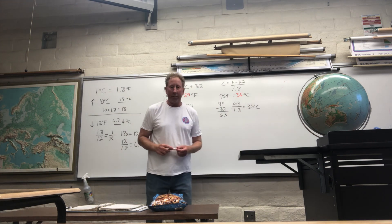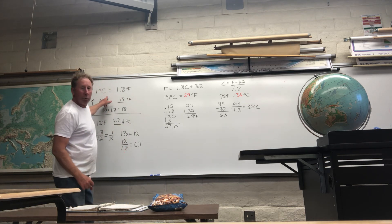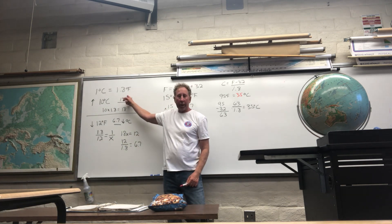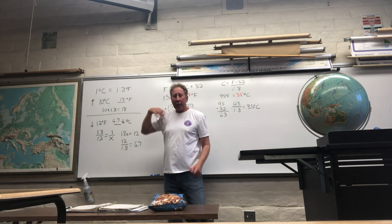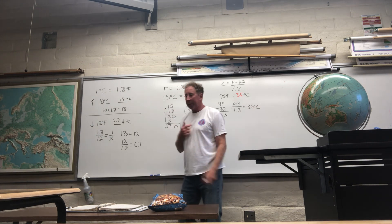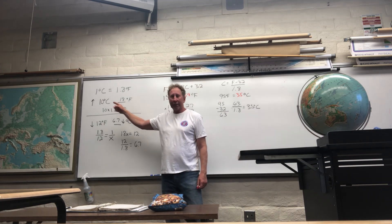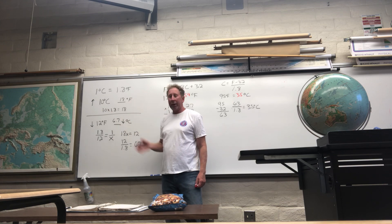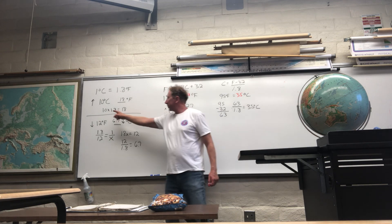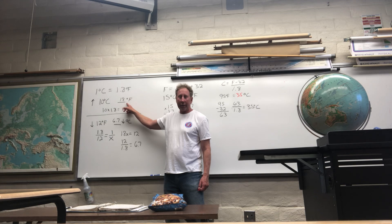The last couple questions, number three and four, are a little bit different. To solve this, you need to know that 1 degree Celsius equals 1.8 degrees Fahrenheit. The example I'm giving you — they're not the same ones that are on there, but you do them just the same way. Let's say the temperature went up on any given day 10 degrees Celsius. How much would that have been on the Fahrenheit scale? Since 1 degree Celsius is 1.8 Fahrenheit, you would just multiply 10 times 1.8. It would have gone up 18 degrees on the Fahrenheit scale.